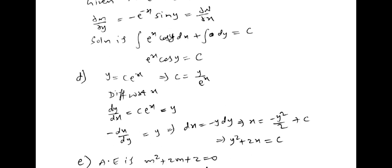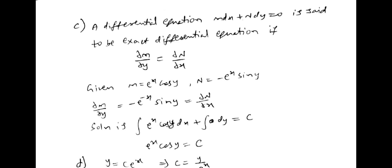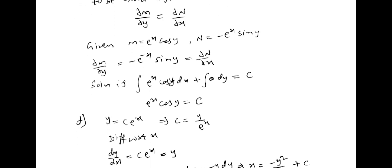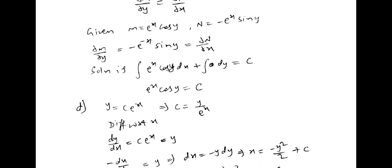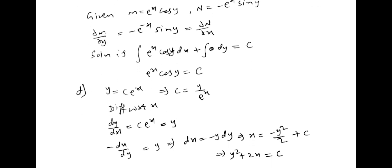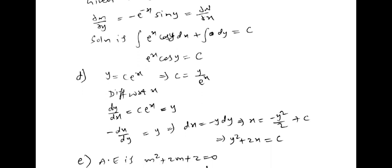So next C, a differential equation M dx plus N dy is equal 0 is said to be exact differential equation when dou m by dou y is equal dou n by dou x. Then given he gave the problem also. So m value we have to compare and we have to take m value and n value, then find the, put it in the general form and integrate it.